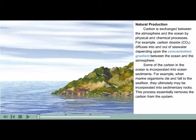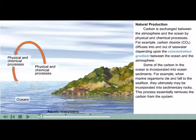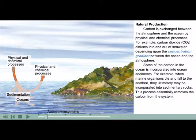Carbon is exchanged between the atmosphere and the ocean by physical and chemical processes. For example, carbon dioxide, or CO2, diffuses into and out of seawater, depending upon the concentration gradient between the ocean and the atmosphere. Some of the carbon in the ocean is incorporated into ocean sediments. For example, when marine organisms die and fall to the seafloor, they ultimately may be incorporated into sedimentary rocks. This process essentially removes the carbon from the system.